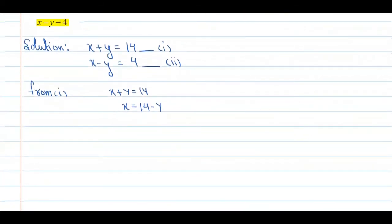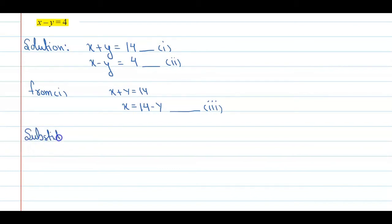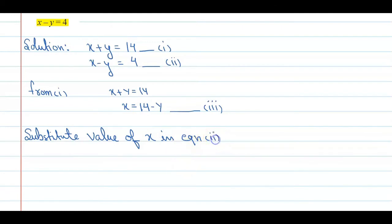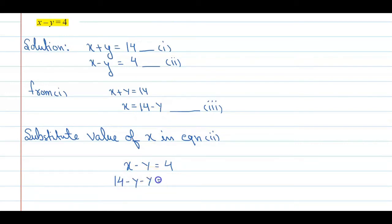Now substitute the value of x in equation number 2. इसको भी आप mark कर दीजिए — this is equation number 3, इसका use last में होगा. Equation number 2 is x minus y equal to 4. From this, x is equal to 14 minus y. ये value हम यहाँ put कर देंगे, that is 14 minus y minus y equal to 4.